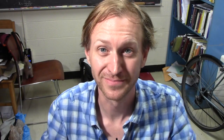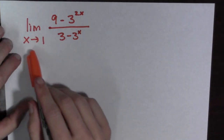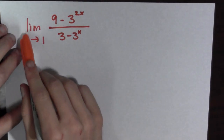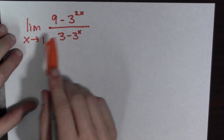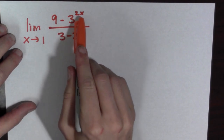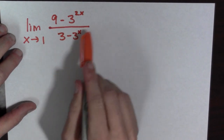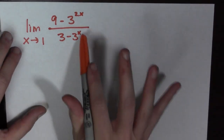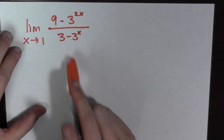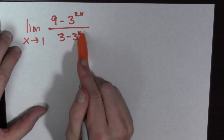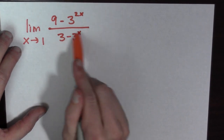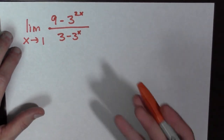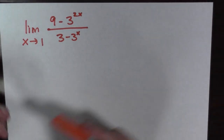Final example. Here we have the limit as x goes to 1 of 9 minus 3 to the 2x, all over 3 minus 3 to the x. While we'd like to plug in 1 for x, we cannot because that gives 3 minus 3 to the 1, which is 0 in the denominator — that's not allowed. This time we factor again.